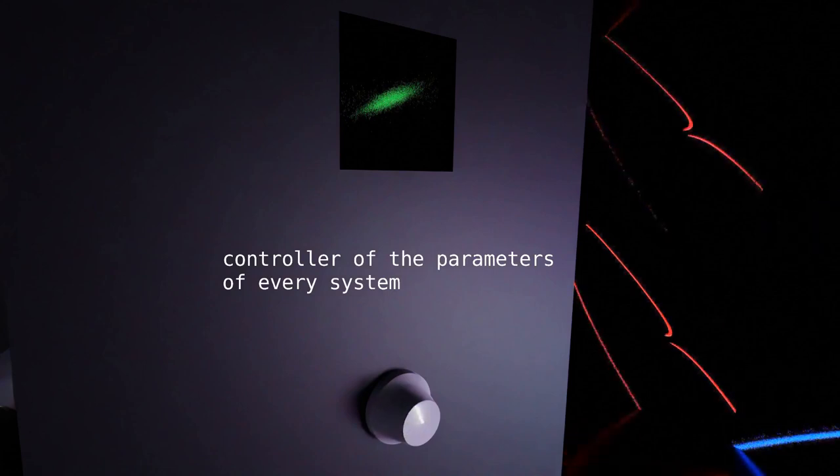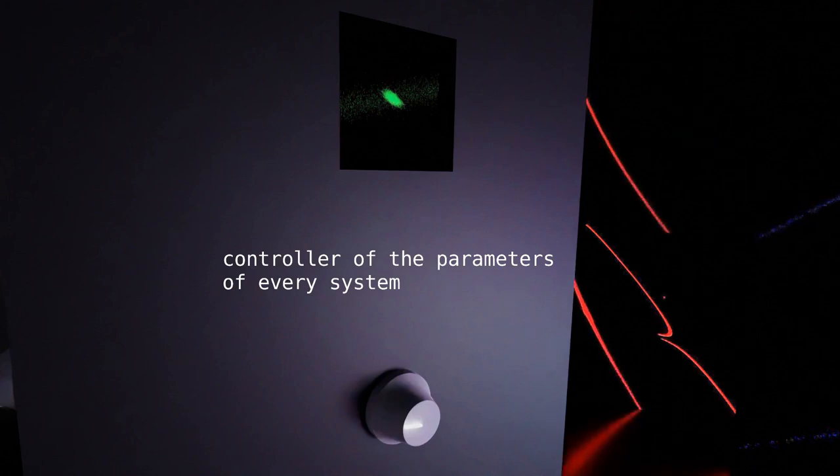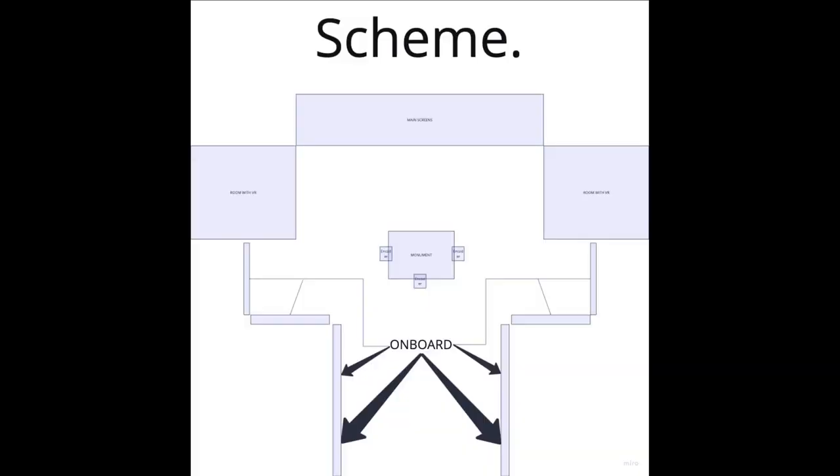An attractor is a stable point to which a dynamic system converges over time. Similarly, in interpretation, we look for an attractor of meaning that would explain what is happening in the text or event.